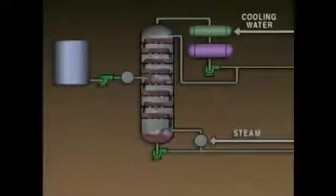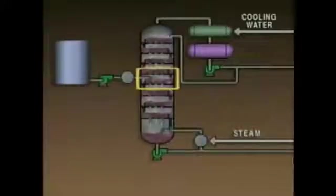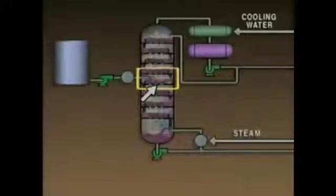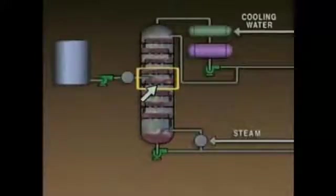Another place where temperature control is important is at the feed point. The temperature at the feed point should be within the boiling range of the mixture and should be close to the temperature of the feed tray. The temperature of the feed tray depends on its physical location in the tower. For example, the lower the feed tray is in the tower, the higher its temperature will be.